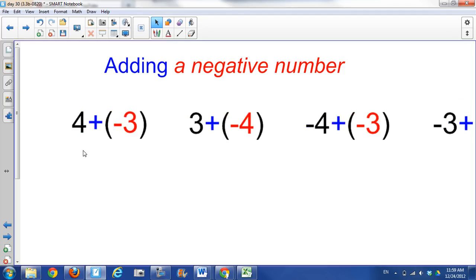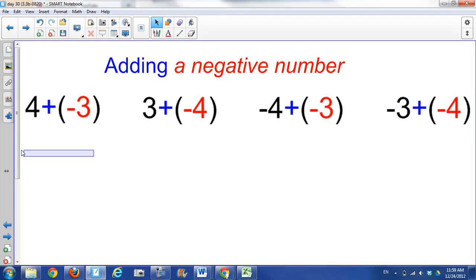This is the same as 4 minus 3, and this is the same as 3 minus 4, and this is the same as negative 4 minus 3, and this is the same as negative 3 minus 4, all four of which we've already done. But I'm going to look at them from the cancelling out perspective.